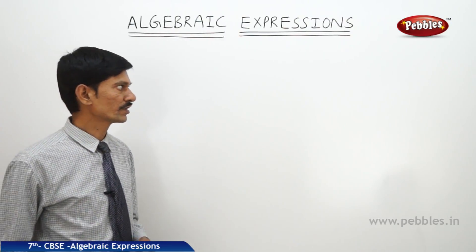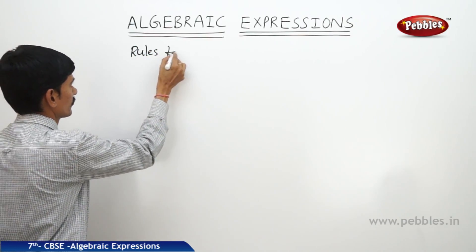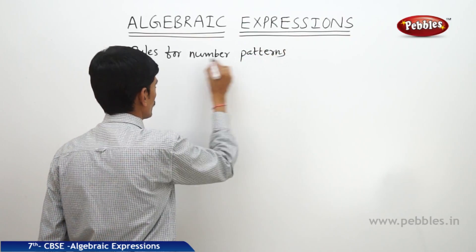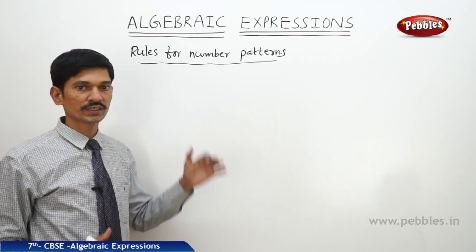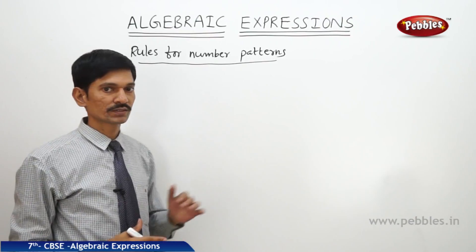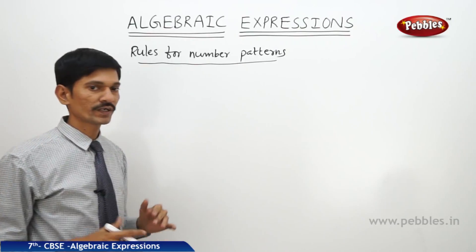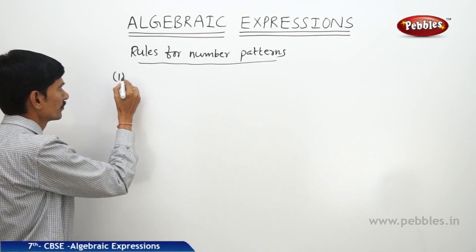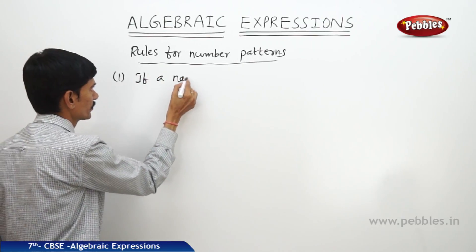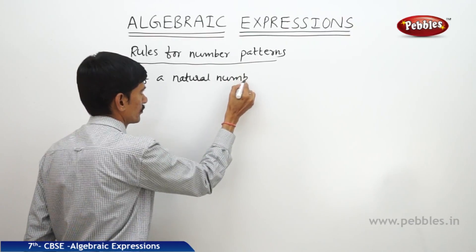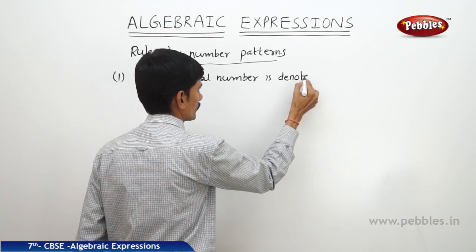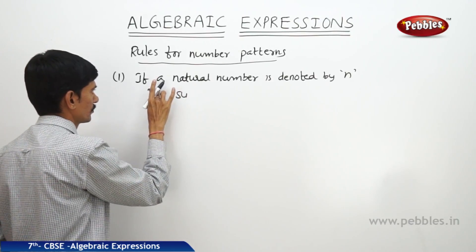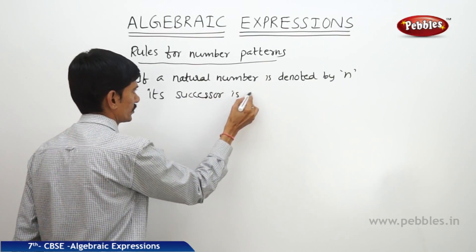Now let us see what are the rules for number patterns. For example, if a natural number is denoted by n, then what is its successor? Its successor means a number which is obtained by adding 1, and it is called its successor. So if a natural number is denoted by n, then its successor is denoted by n plus 1. This is a rule for number patterns.